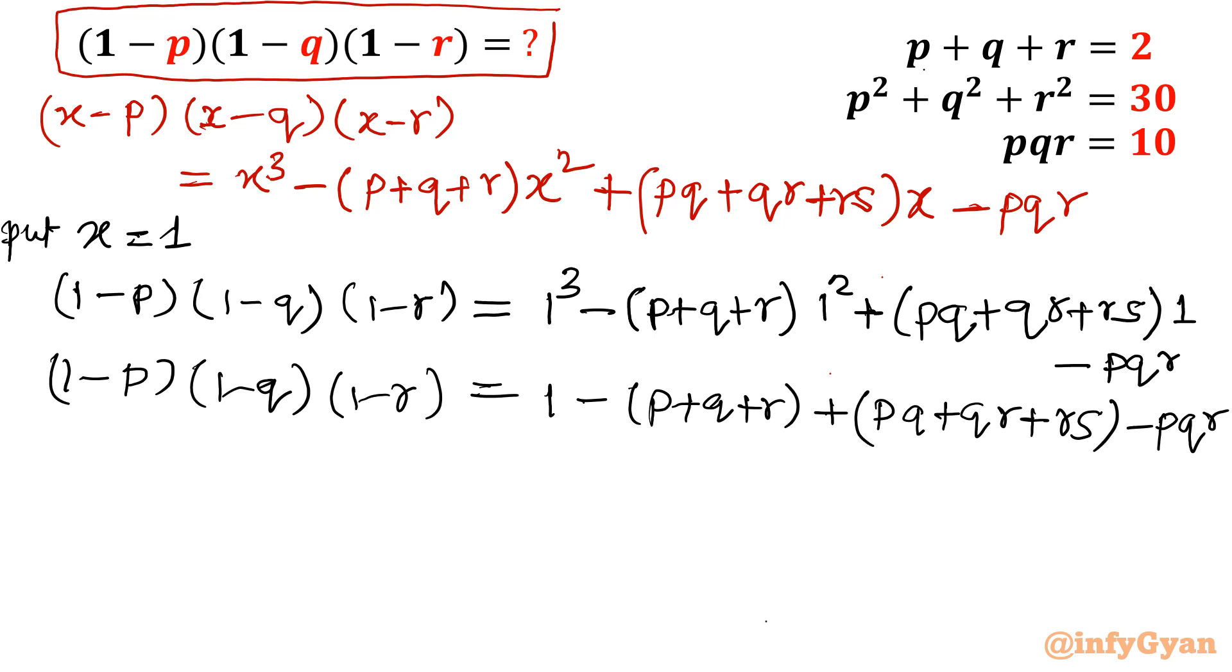Now you can see, only need to substitute the values. This is our equation 1, equation 2, equation 3 and fourth equation was pq plus qr plus rs equal to negative 13. That was our equation 4. Now let us put the value. 1 minus (p+q+r) equation 1 is 2, plus equation 4 minus 13, minus equation 3 which is 10.